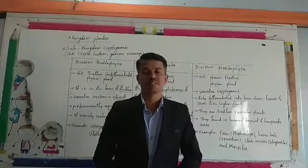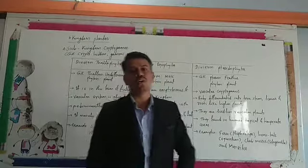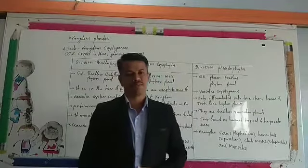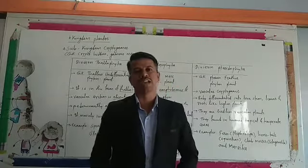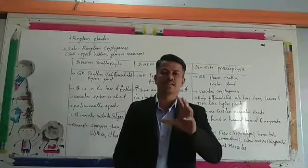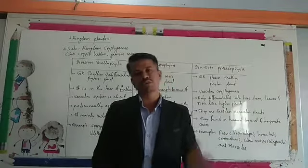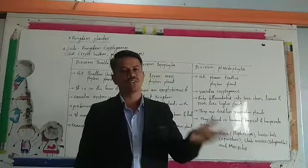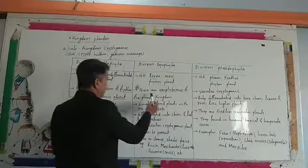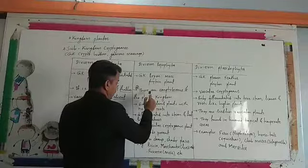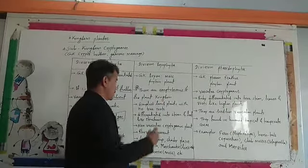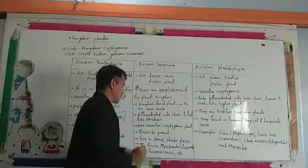What do we mean by amphibians? They live on land as well as in water — just like in Kingdom Animalia, for example the frog, which lives in water as well as on land. Similarly, in Division Bryophyta, these plants are called the amphibians of the plant kingdom.